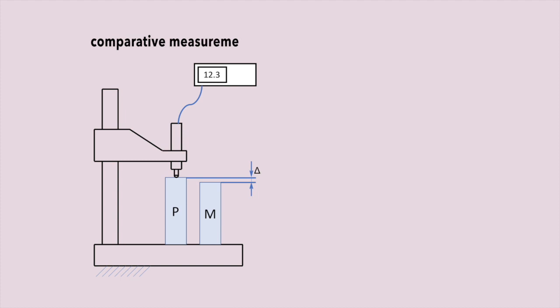In comparative measurement, the device only measures the difference between the part and the master. In such cases, it is pointless to use this master to check the bias of the measurement.